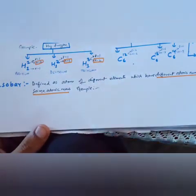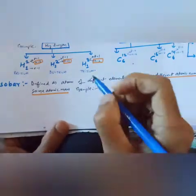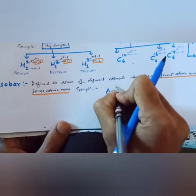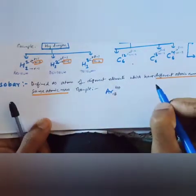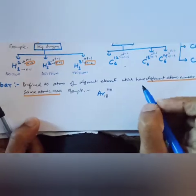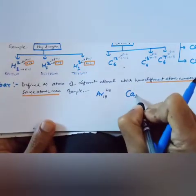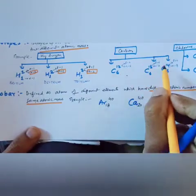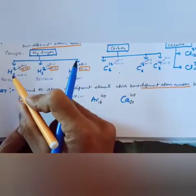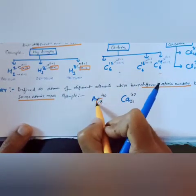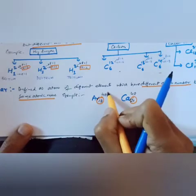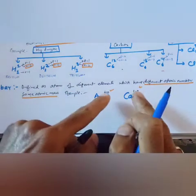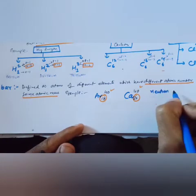An example of isobars: argon has atomic number 18 and atomic mass 40, while calcium has atomic number 20 and atomic mass 40. You can see the atomic numbers are different — 18 and 20 — but the atomic mass is the same, 40. This is possible because of the role of neutrons; neutrons can vary and cause the same mass in different elements.